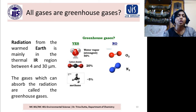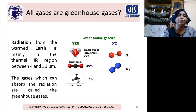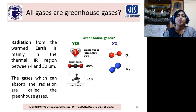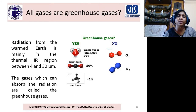The outgoing Earth radiation is in the IR region — the infrared region — and it remains in the frequency range between 4 and 30 micrometers.